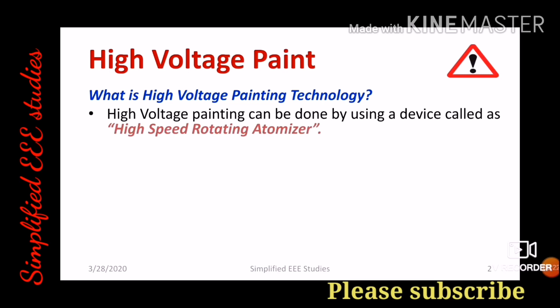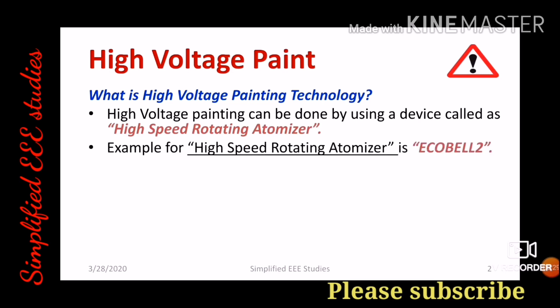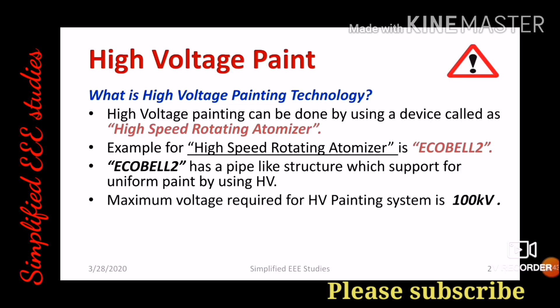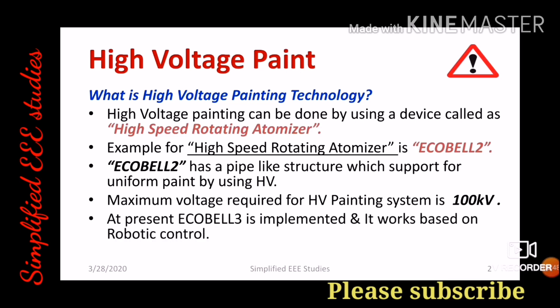High voltage painting can be done by using a device called a high speed rotating atomizer. One example of a high speed rotating atomizer is Echo Belt 2. Echo Belt 2 has a pipe-like structure with support for uniform painting by high voltage. The maximum voltage required for the high voltage painting system is 100 kilovolt. At present, Echo Belt 2 has been upgraded into Echo Belt 3, which is basically a robotic control device.